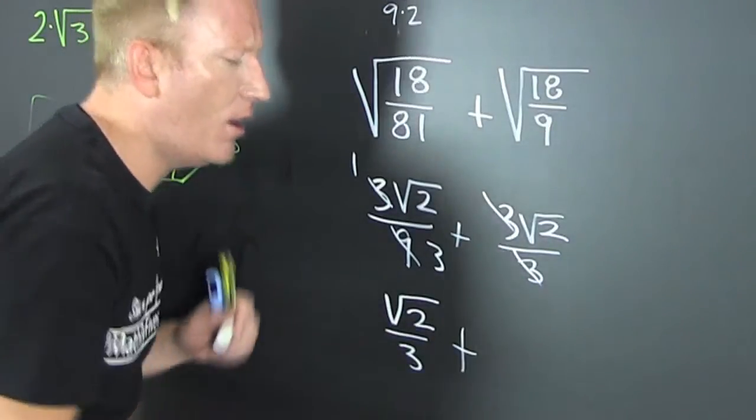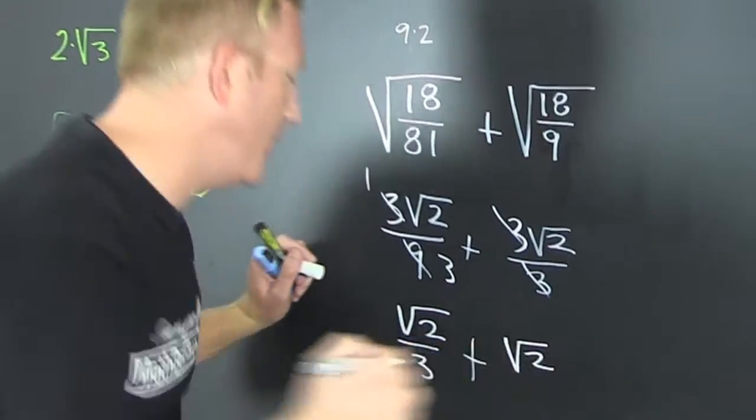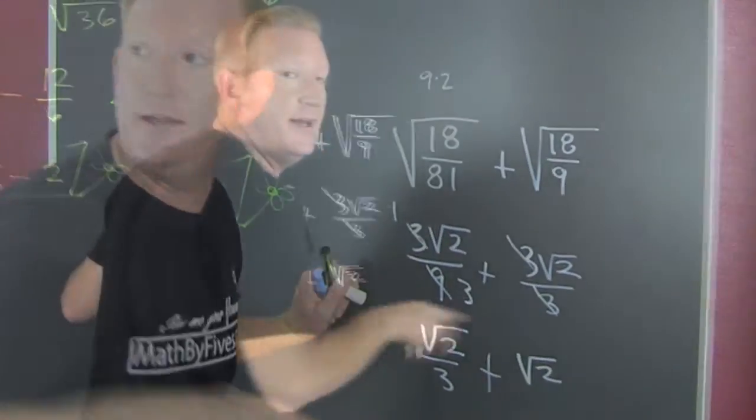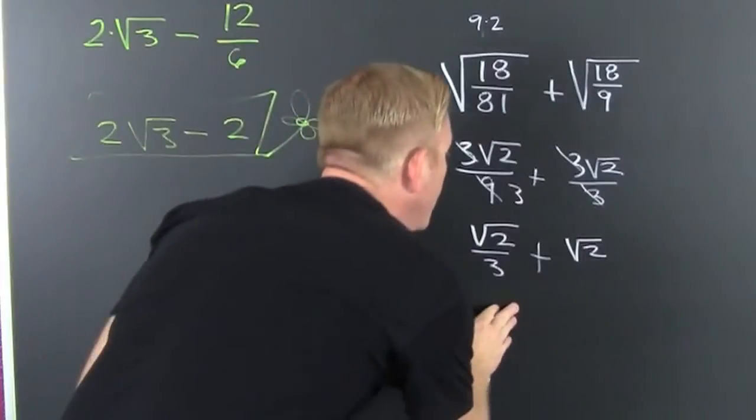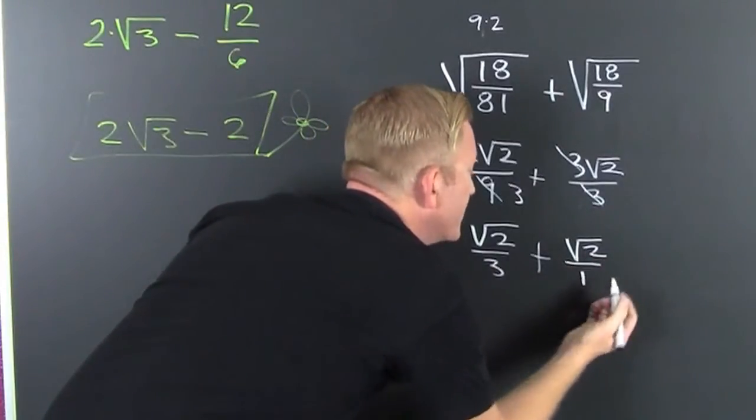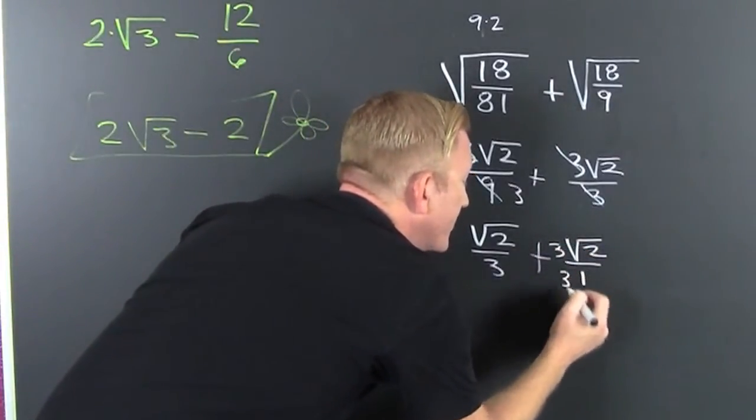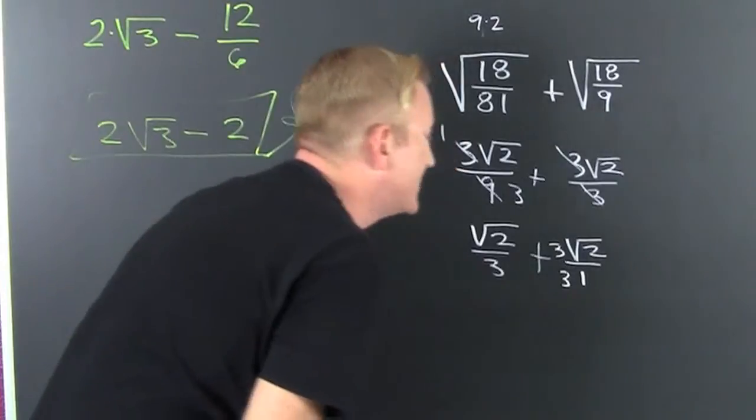Oh √2, oh no you're not done yet, we gotta get low. Because that's over a 1, so I need to multiply this by a 3 over a 3 because when I'm adding fractions I got to get a common denominator.